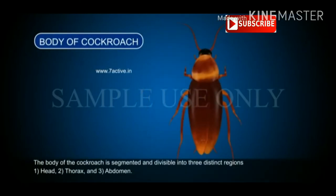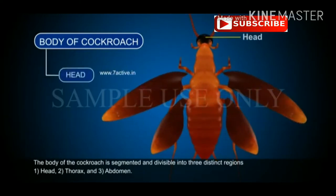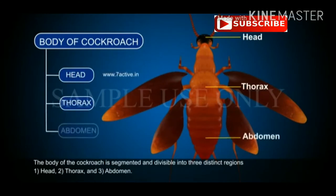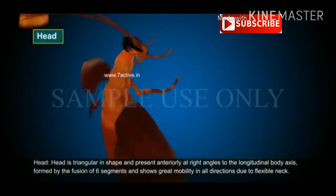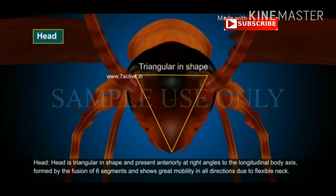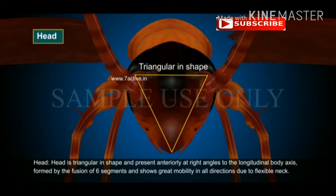The body of the cockroach is segmented and divisible into three distinct regions: one, head; two, thorax; and three, abdomen. The head is triangular in shape and present anteriorly at right angles to the longitudinal body axis, formed by the fusion of six segments.